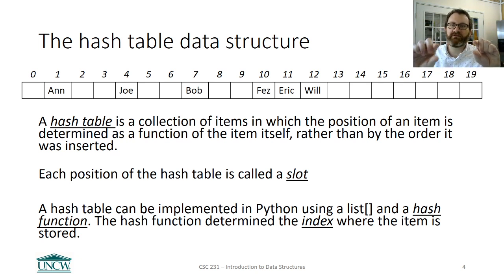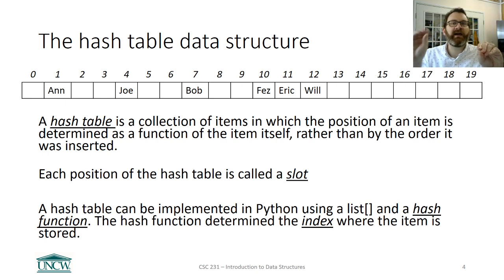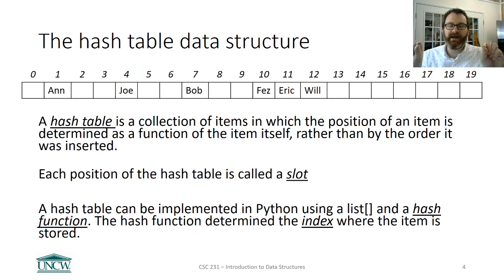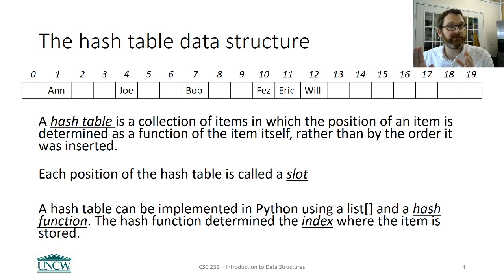In a hash table you can have empty slots — in fact the hash table starts out empty, and then you start hashing things you want to put in and they go to different places in the hash table. Where they go is determined by the hash function. When you implement this in Python, we're going to use an array-based list as the underlying storage. The hash function is going to determine which slot — which index in the array — we put the item.